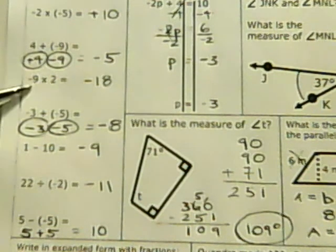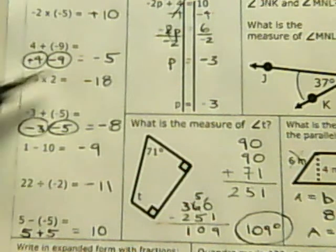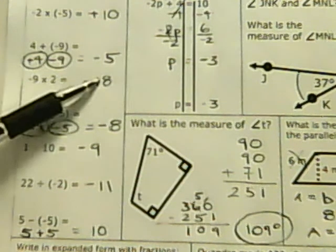Again, multiplying. 9 times 2 is 18. A negative times a positive is a negative.